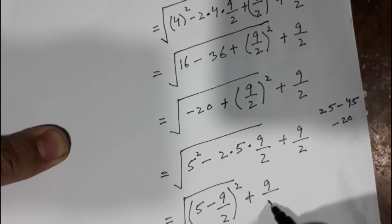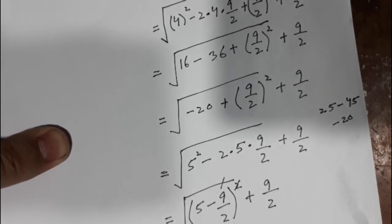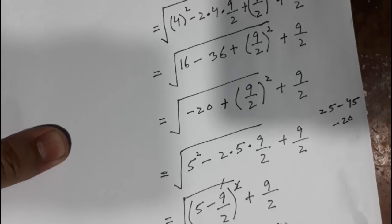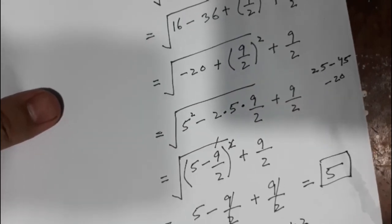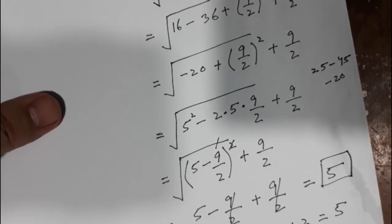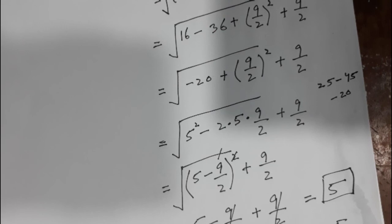Minus 9 divided by 2, so under this square root. Cancel the square with the square root — it would be again 5 minus 9 divided by 2, plus 9 divided by 2. Cancel the 9 divided by 2 terms, so it would be equal to 5. Now I proved that 2 plus 2 equals 5. I made a tricky mistake in this video, so find that mistake and mention it in the comment section. If you find the mistake, you would be a mathematics genius. Thanks for watching.